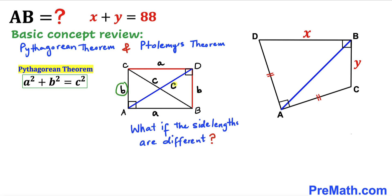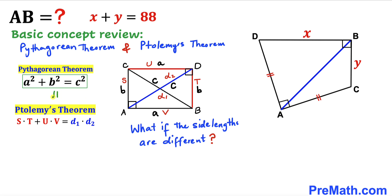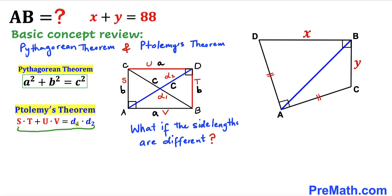Now the question is: what if all these side lengths are different? If we call the side lengths S, T, U, V, with diagonals D1 and D2, then the Pythagorean theorem becomes Ptolemy's theorem: S times T plus U times V equals D1 times D2, as seen in this equation.